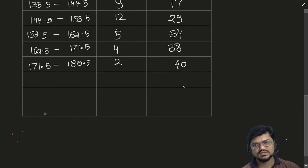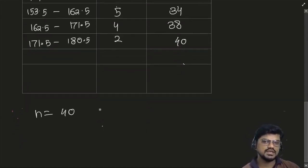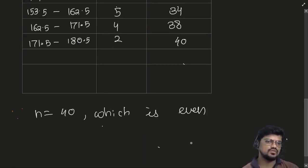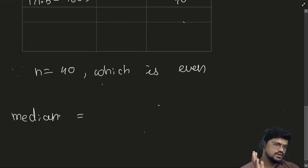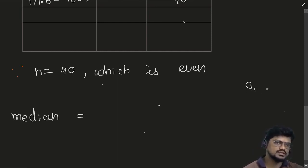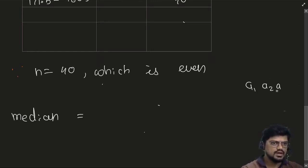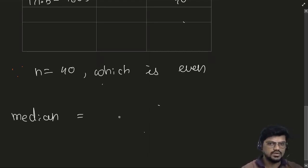Since n equals 40, which is even, for even data the median is the average of the n/2-th and (n/2 + 1)-th observations. So that means we need the 20th observation plus the 21st observation, divided by 2.